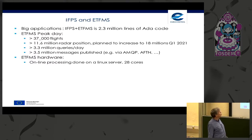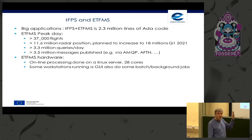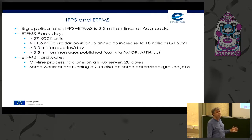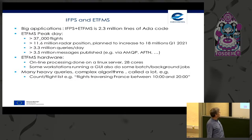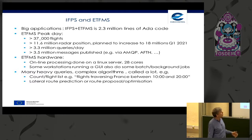What hardware do we run on? The online processing is done on a Linux server with 28 cores — not a small server, but not a huge setup. We have workstations running a graphical user interface for our internal flow controllers, and on these workstations we also do batch processing and background jobs. We have many heavy queries and complex algorithms — for example, queries like 'give me a flight list for all flights traversing France between 10 o'clock and 20 o'clock.'